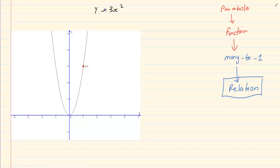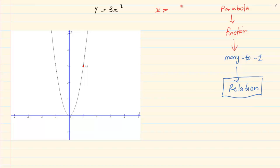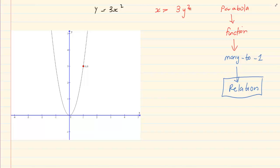Let us first start by changing the formula. The rule says inverse means x becomes y and y becomes x. So I have x is equal to 3y squared. We need to make y the subject of the formula, so I am going to divide by 3, giving x over 3 is equal to y squared.